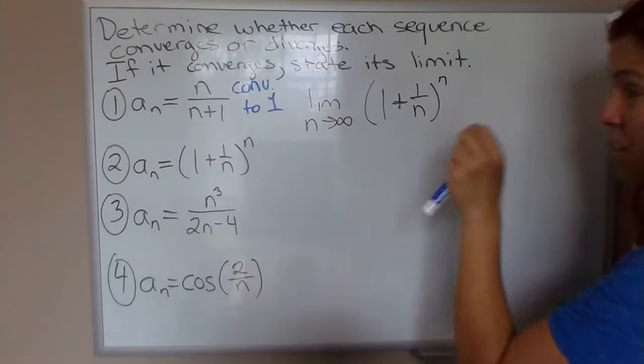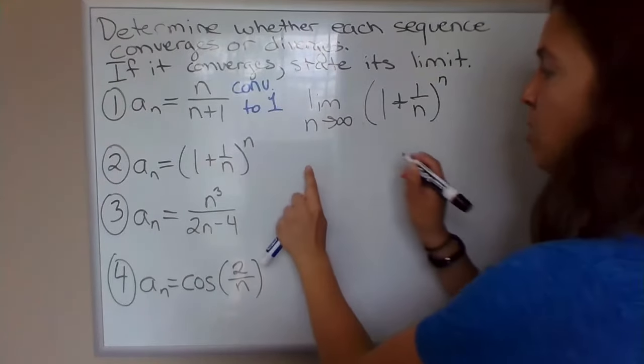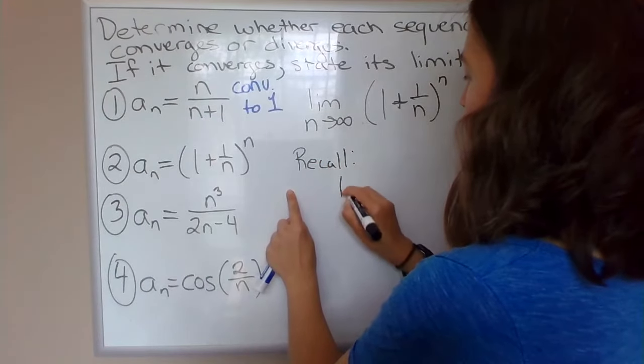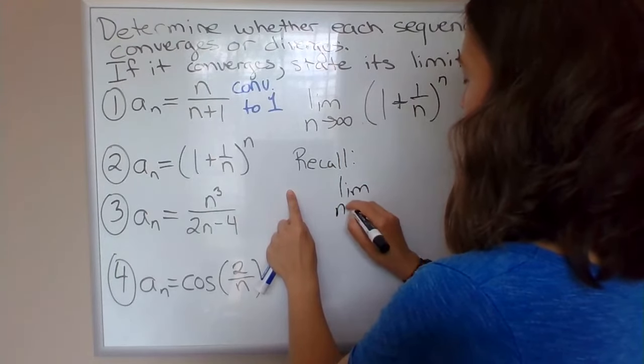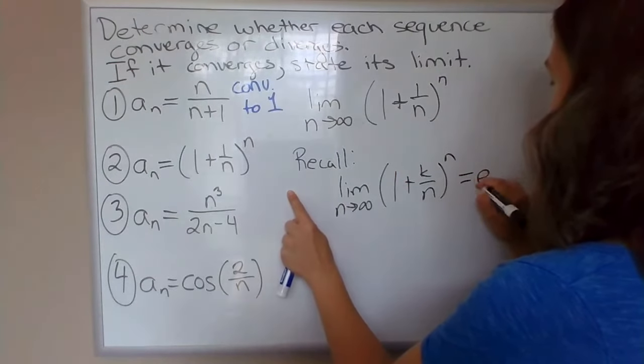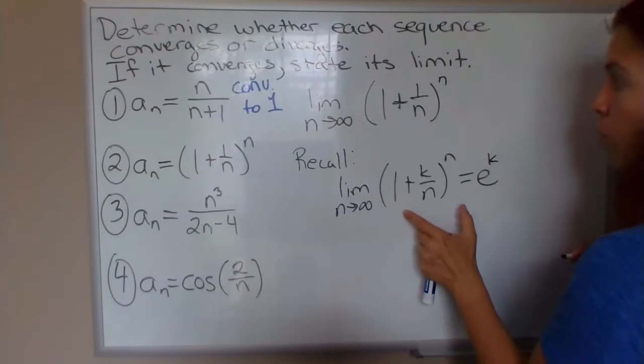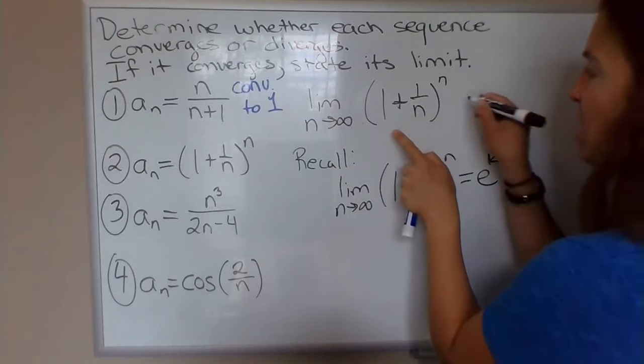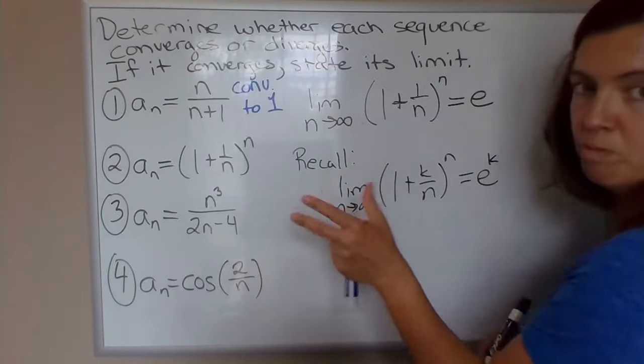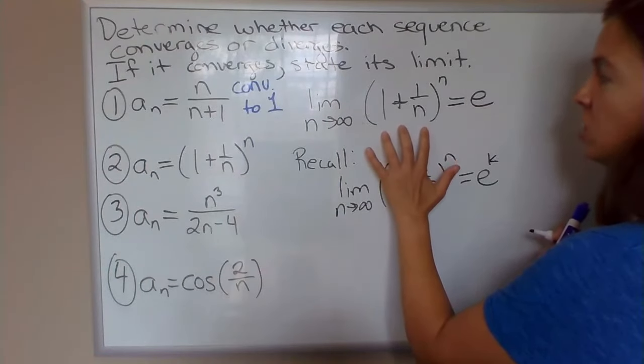So this is another nice limit to be able to just recognize. We did show back in section 5.6, so I'll put a recall here, that limits of this form, limit as n approaches infinity of 1 plus k over n to the n is equal to e to the k. We did show this in section 5.6. So 1 plus 1 over n to the n, this is actually the definition of the irrational number e, which is equal to about 2.7, and then infinitely many decimal places after that. But yeah, this is our definition of e.